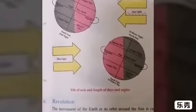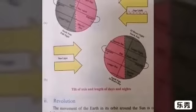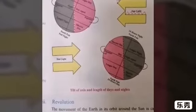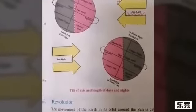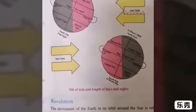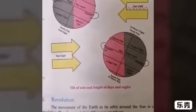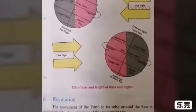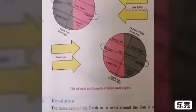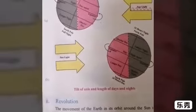The earth completes a revolution in its orbit in about 365 days and 6 hours. This revolution — this movement — causes the formation of seasons.